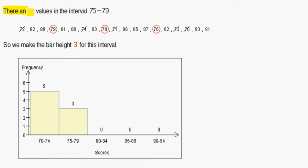There are 3 values in the interval between 75 and 79. We have 79, 78, and 76. So in the 75 to 79 category, we go up to 3, and that's where we make our bar. That is the frequency of which they occur.